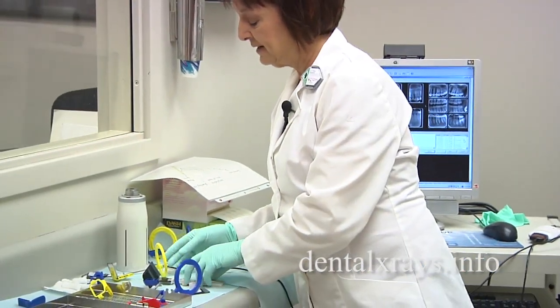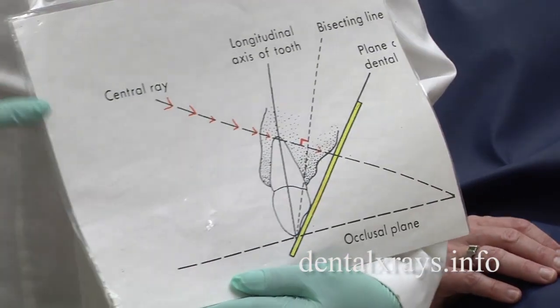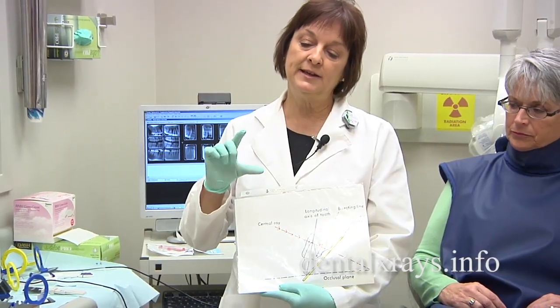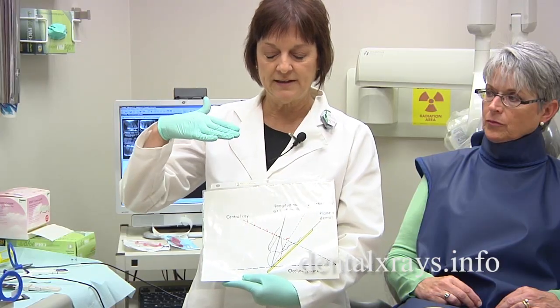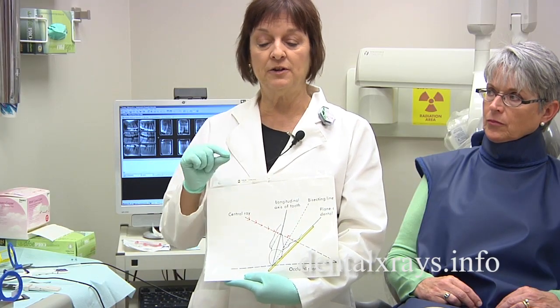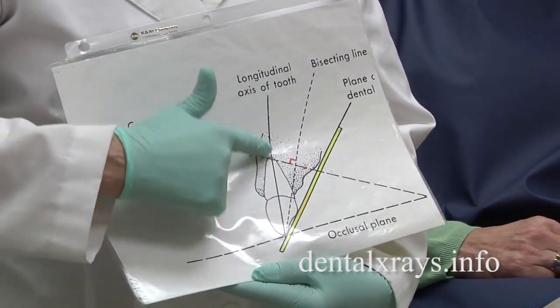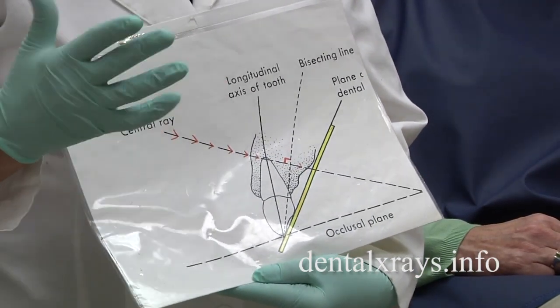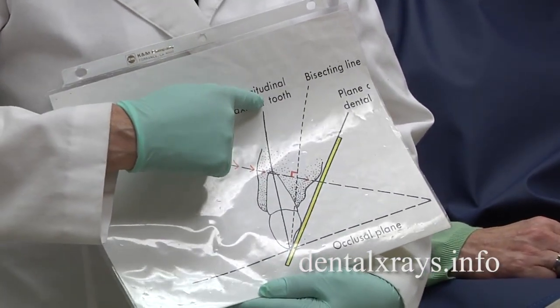A lot of offices do not use this ring — they use the actual bisecting angle technique. I'll explain it on this diagram here. Ideally what you want to get is the correct length of the tooth image on your film. To do this you have to use the correct vertical tube angle when projecting the x-ray at the tooth. Too much or not enough vertical tube angle is going to cause the error of elongation and foreshortening. Bisecting angle — where that term comes from — is determined by the placement of the film in the mouth and the long axis of the tooth.